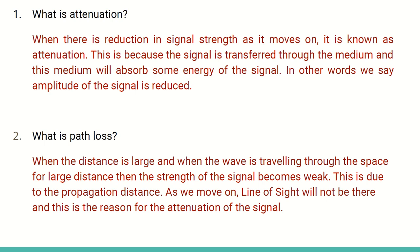What is path loss? When the distance is large — the distance from the source to destination — and when the wave is traveling through space for a larger distance, the signal becomes weak. The signal travels along a longer distance, it gets weaker as it goes further and further. This is because of the propagation distance.